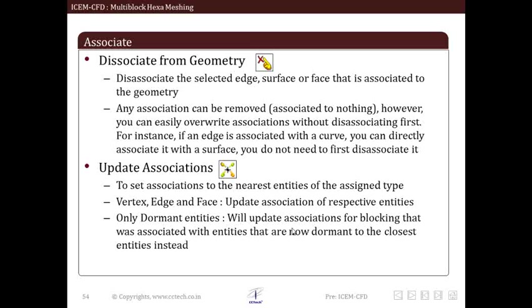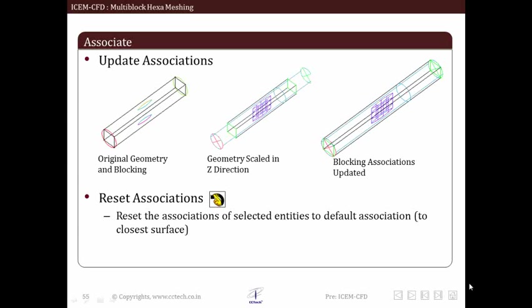This takes comparatively lesser time. A simple example of update association is shown in figure. We can see how original block is used on scaled up geometry as well as results after update association on new geometry with more or less same topology. The reset association option resets association of exterior blocking entities back to association with nearest surface.